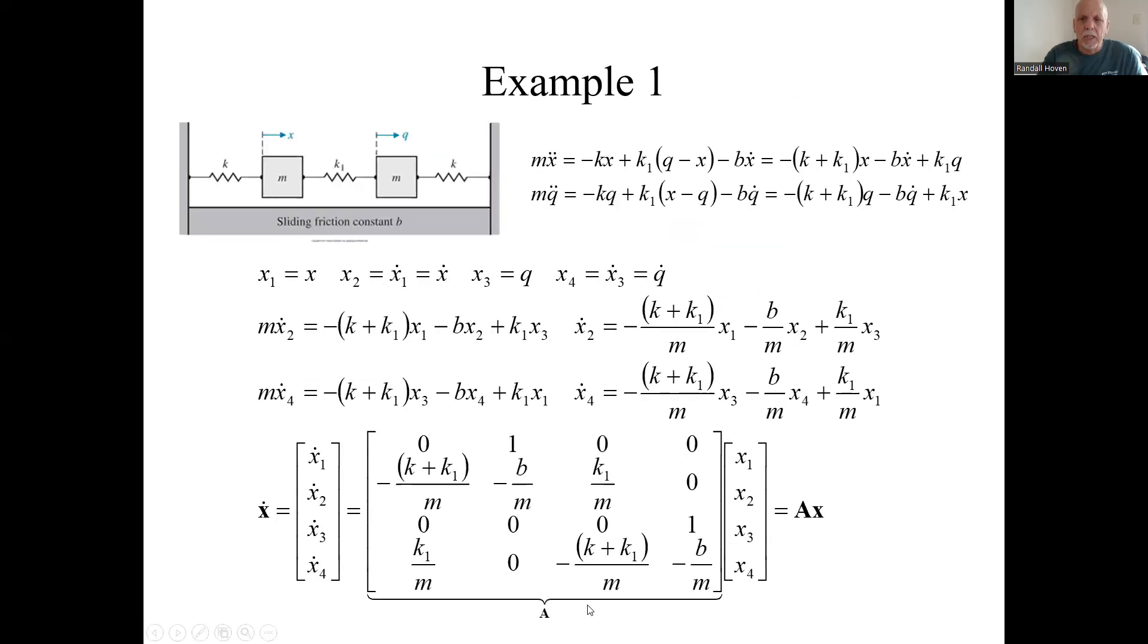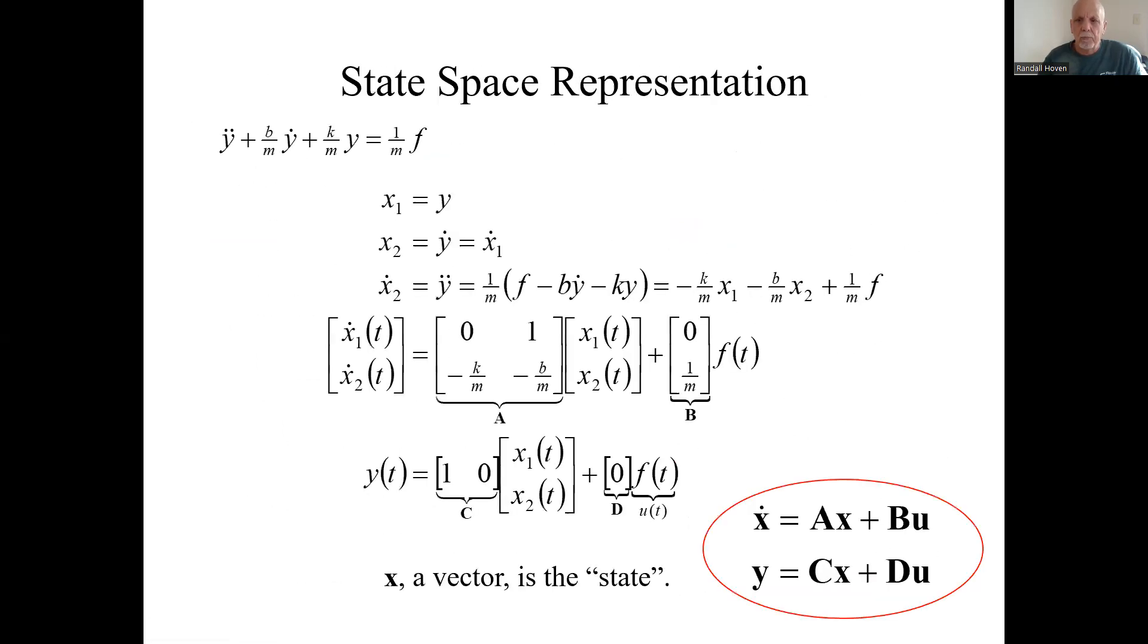But the inputs and outputs, u's and the y's, are going to be scalars, not vectors. In general, you know you go back to this state space—A, B, C, and D are matrices, x, y, and u are in general vectors. But in my course, I'm limiting u and y to be scalar. x will still be a vector, but only a two-by-two vector.